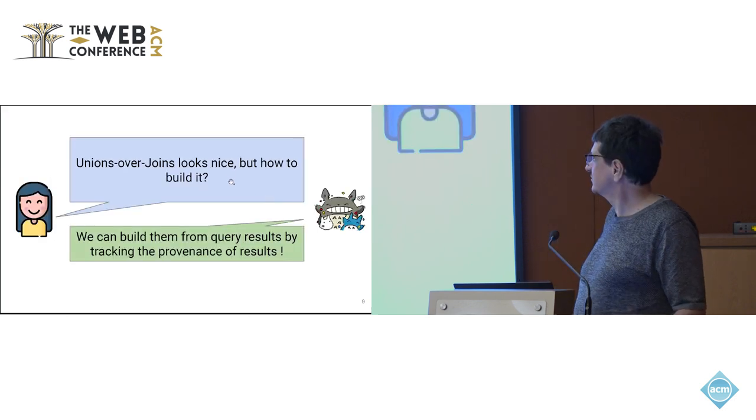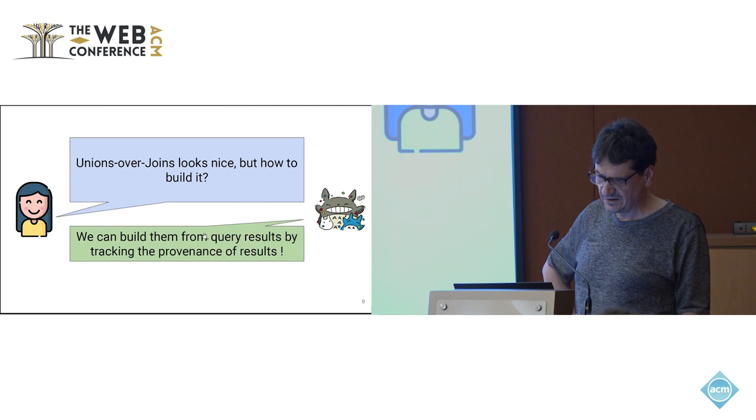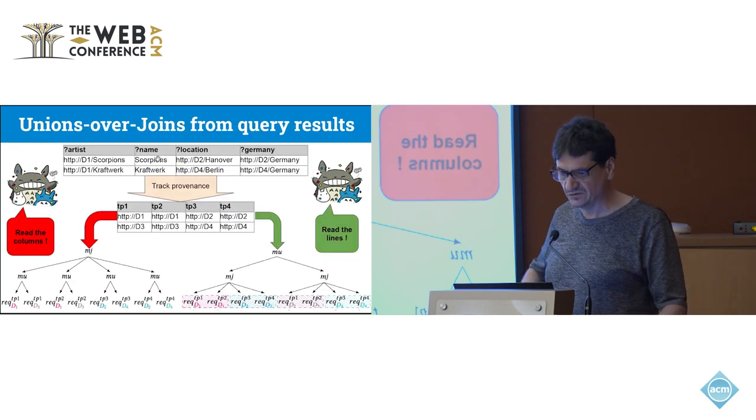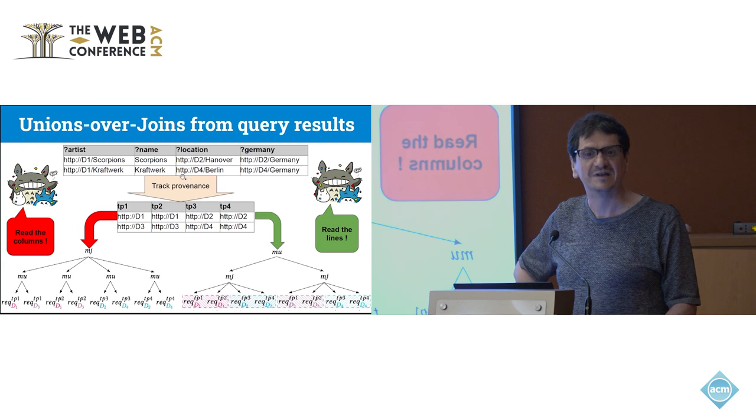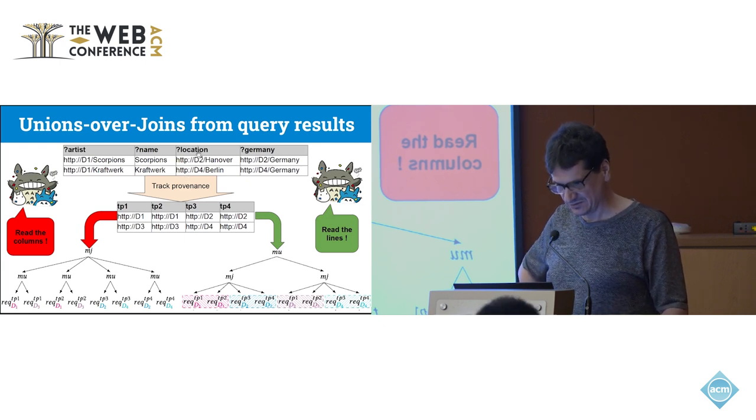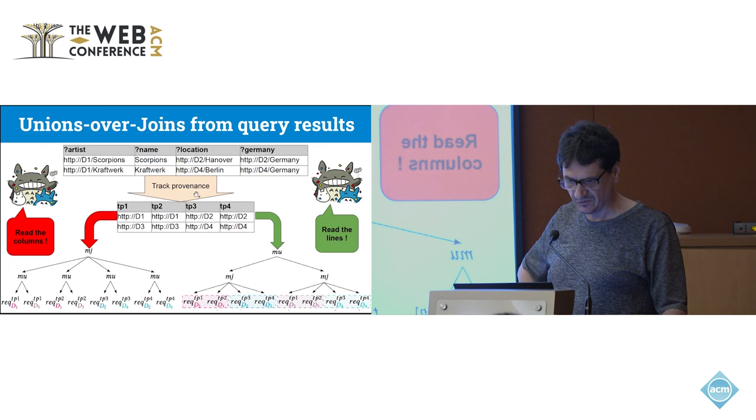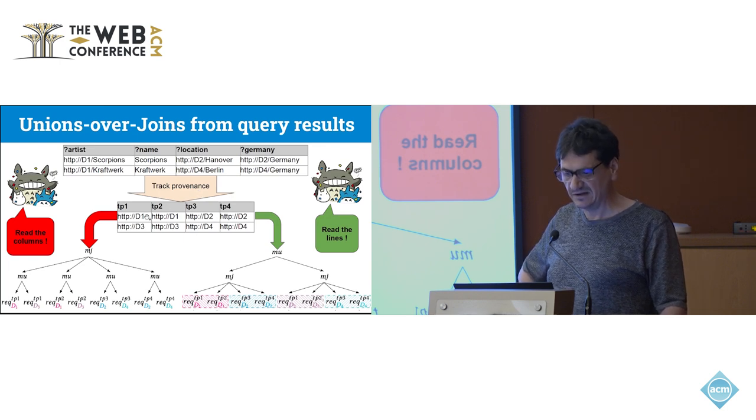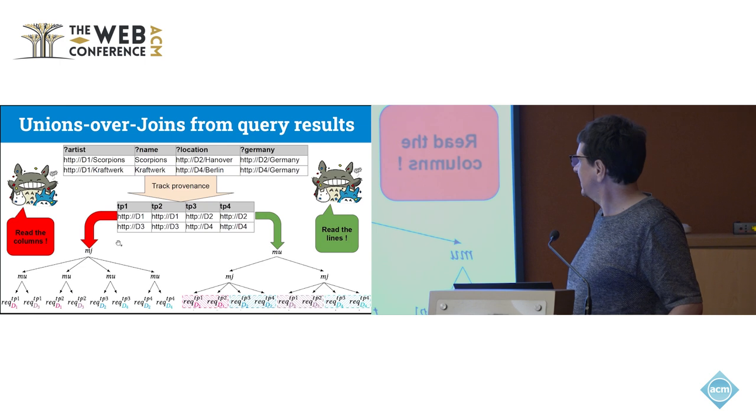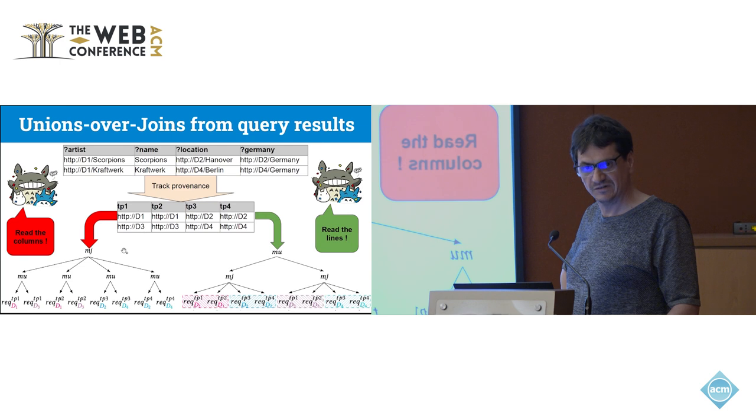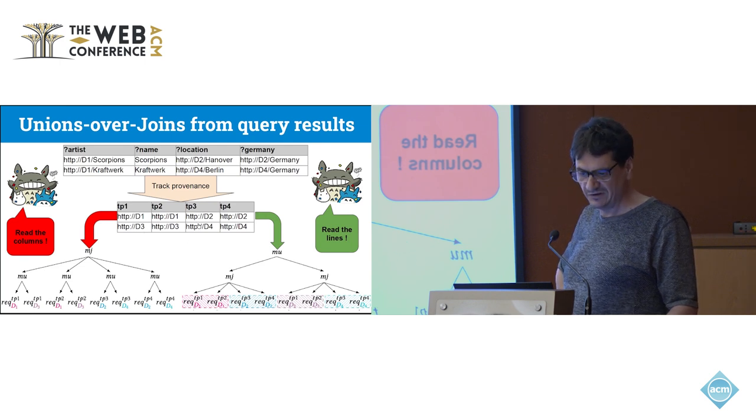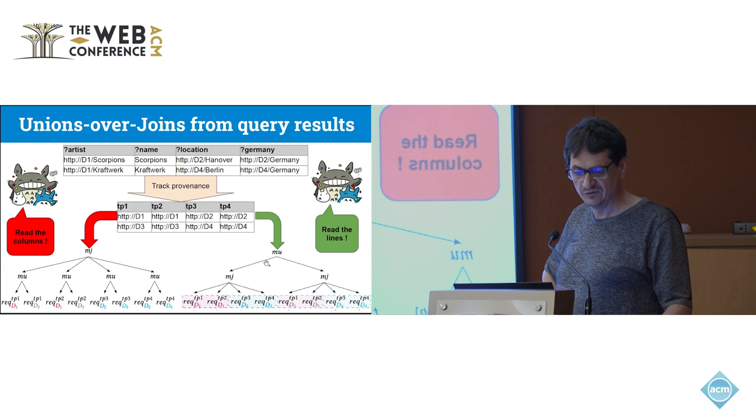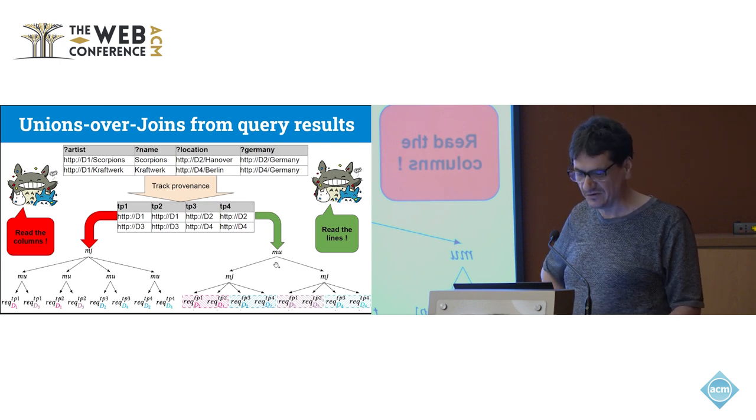Union-over-join looks very nice, but how to build it? In fact, the trick to build it is to start from the results and track provenance. Here you have two results. If you track the provenance of the results, you will find that there are just two combinations of sources that give results: D1, D1, D2, D2, D3, D3, D4, D4. If you look to the state of art, they just look to the columns. If you see each column, you build your multi-union. But if you look to lines, then you build union of multi-joins. So it's better to read the lines.